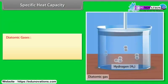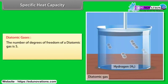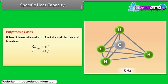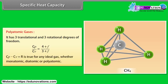Diatomic gases: The number of degrees of freedom of a diatomic gas is 5. CP by CV is equal to 9 by 7. Polyatomic gases: It has 3 translational and 3 rotational degrees of freedom. CP by CV is equal to 4 plus F upon 3 plus F. CP minus CV is equal to R is true for any ideal gas whether monoatomic, diatomic or polyatomic.